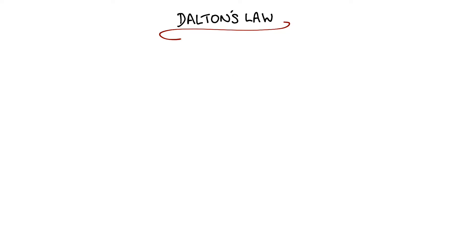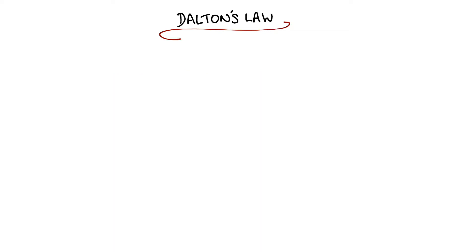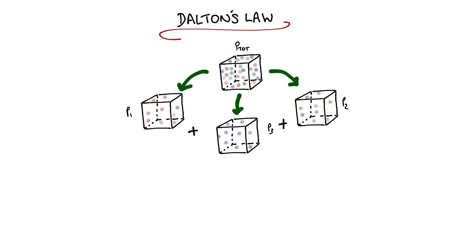We now go on to look at Dalton's law, which states that the total pressure of a mixture of gases equals the sum of the partial pressures of the individual gases. If we've got a container at a given pressure of a mixture of gases, so it has a total pressure which we'll call P tot, that total pressure is the same as if we added up the individual components of those gases.